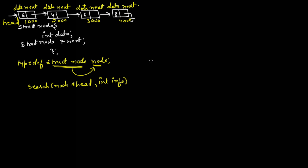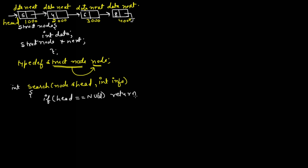If the data is present in the linked list, we return yes (1); if it is not present, we return no (0). The return type of this function is int. First, if head is equal to null — meaning the linked list is already empty — we cannot search, so we return 0.